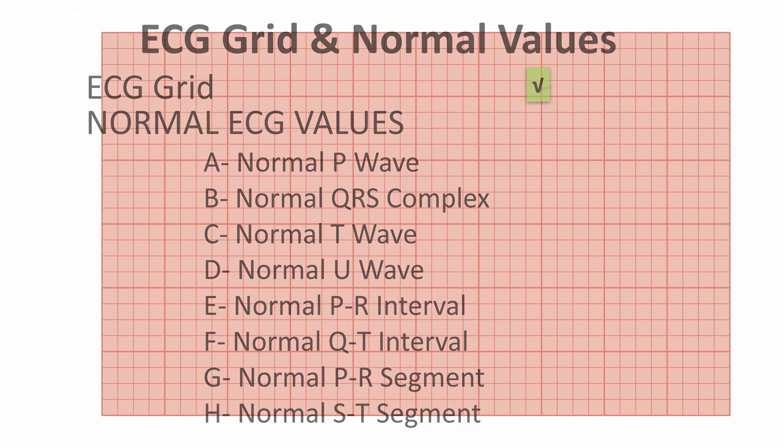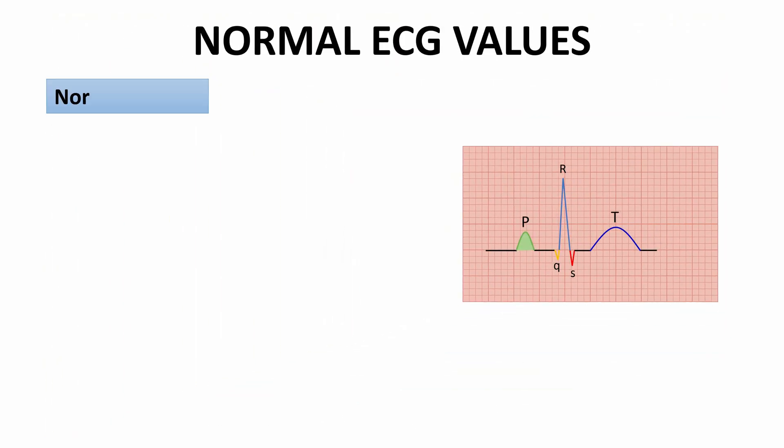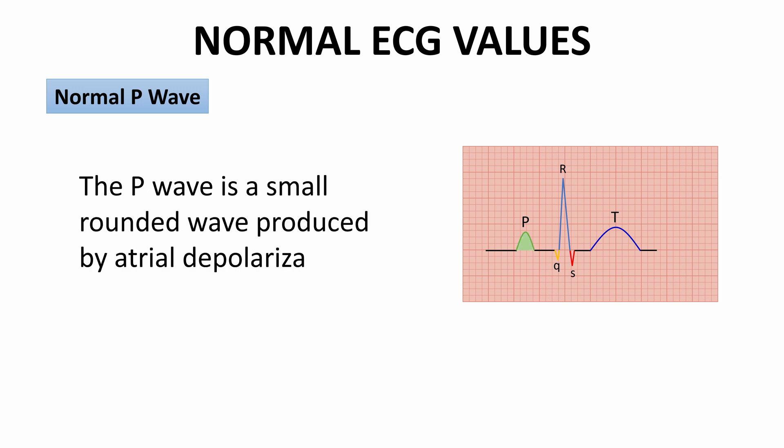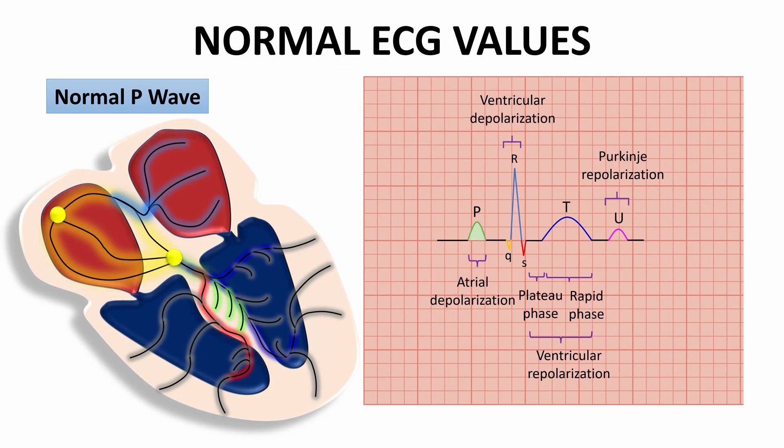The P wave is a small, rounded wave produced by atrial depolarization. In fact, it reflects the sum of right and left atrial activation, the right preceding the left, since the pacemaker is located in the right atrium.